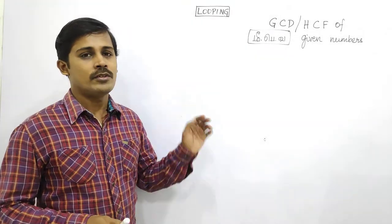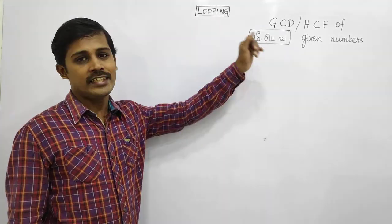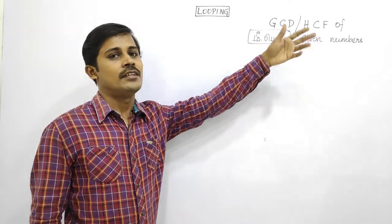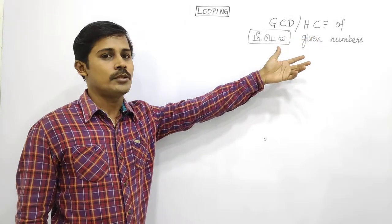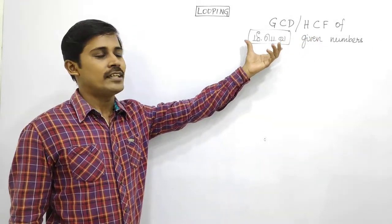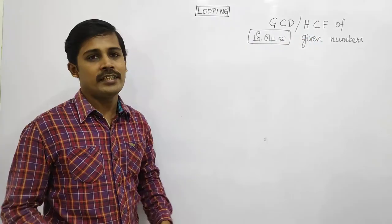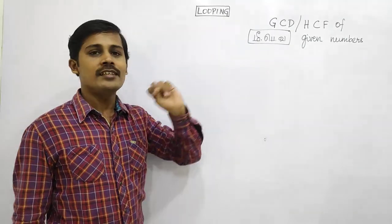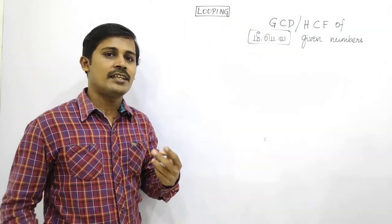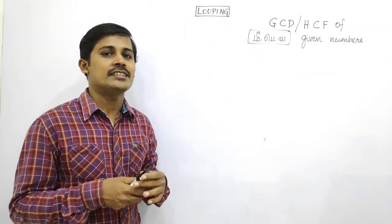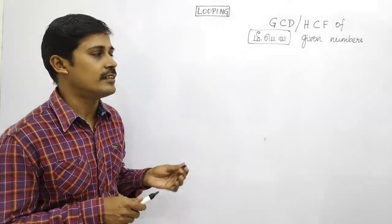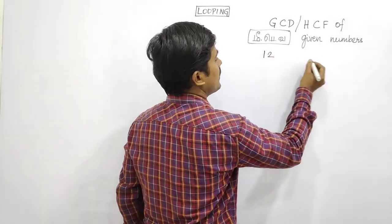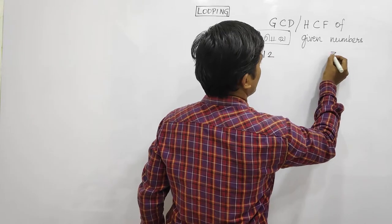Now we will see the program in this programming series: GCD or HCF of two given numbers. We will read two numbers and find the common factors — the highest common factor. I will use two numbers: 12 and 30.